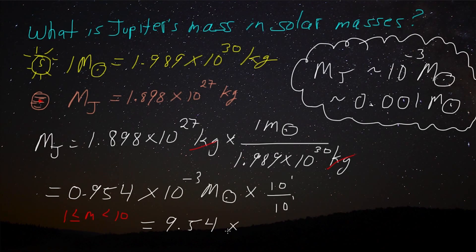I take 10 to the minus 3 and subtract from minus 3, 1. So minus 3 minus 1 is 10 to the minus 4 solar masses.